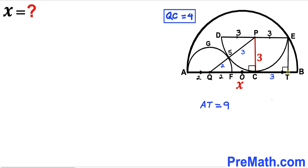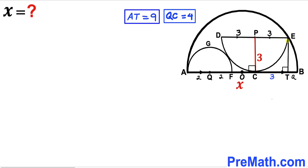Our next task is to calculate the tiny segment TB, which I will label as lowercase a. We can see that ET length equals PC length — if PC is 3 then ET is 3 units as well. In this next step I am going to connect point A with point E and point E with point B, giving us segments EA and EB.